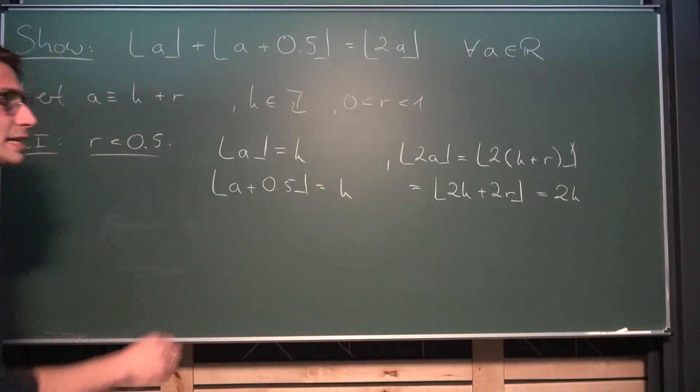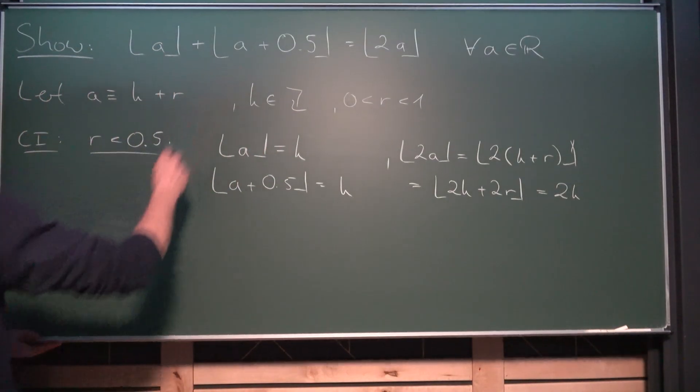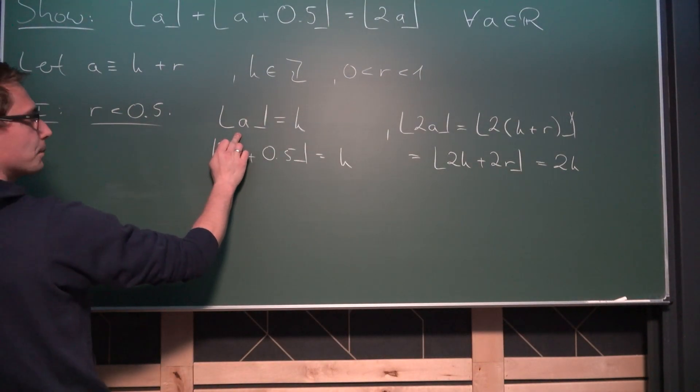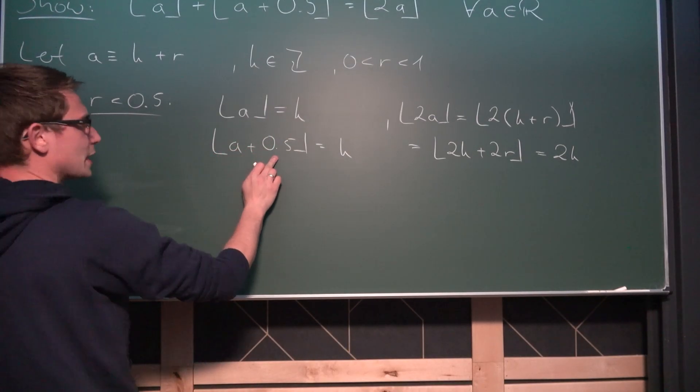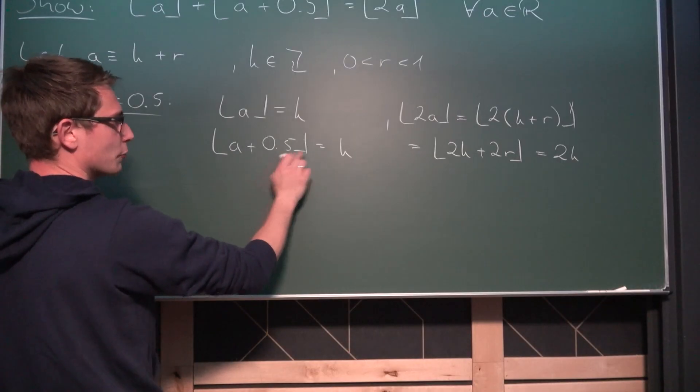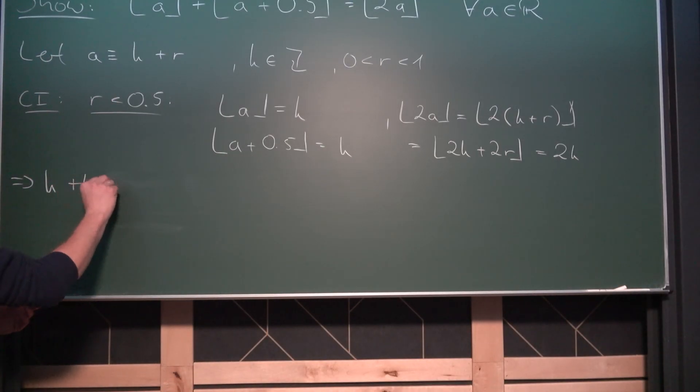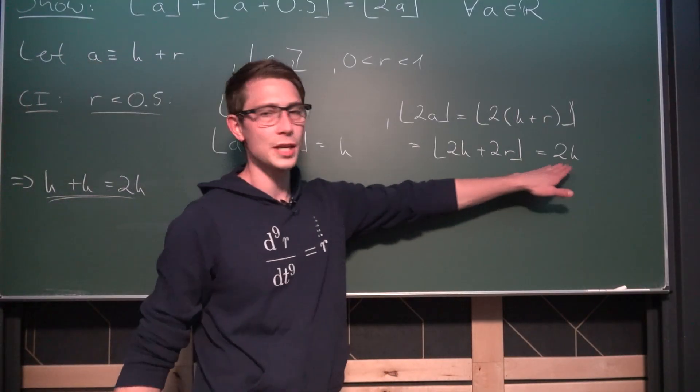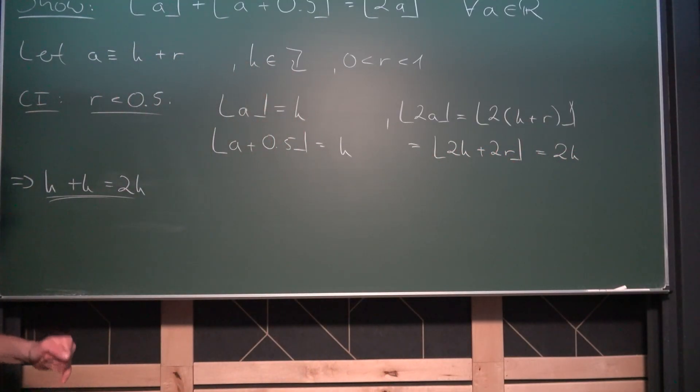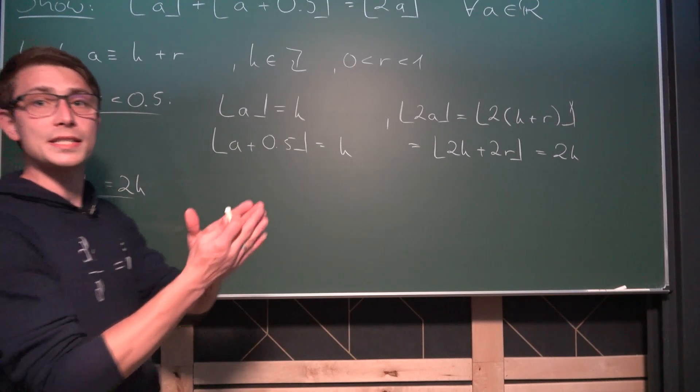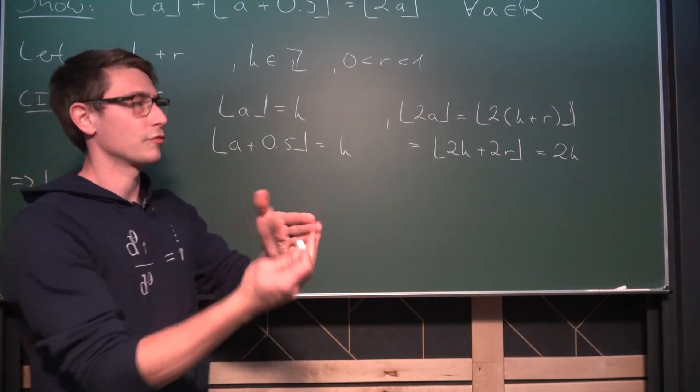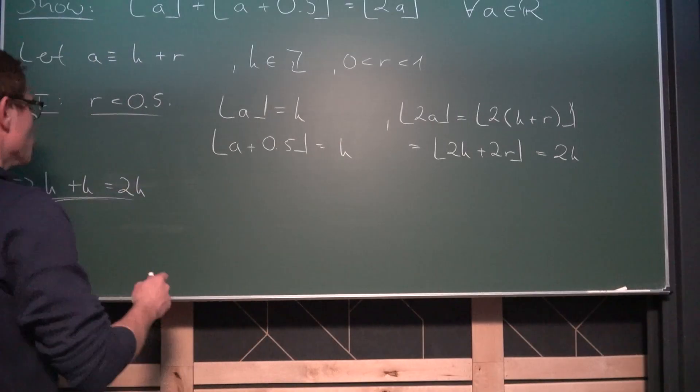Now let us see if this holds. Left side of the equation, the floor of A is the same as k. Then we would have the floor of A plus 0.5 is going to evaluate to k, which is the same as 2 times k. And this right here works out with what we evaluated here. Now let's go through the other part of the casework. Namely when r is greater or equal to 0.5 but still less than 1.